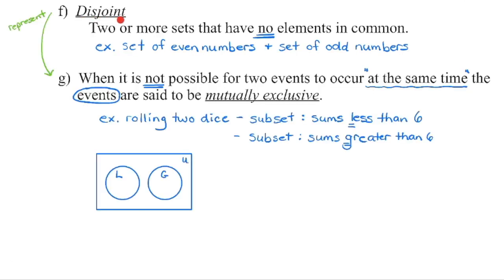We can use disjoint sets to represent mutually exclusive events. For example, if we roll two dice and have one subset as all sums less than 6 and another subset as all sums greater than 6, there is no sum that can be both less than 6 and greater than 6 at the same time. Mutually exclusive events are when it is not possible for two events to occur simultaneously — just like the sun rising and setting cannot happen at the same time.